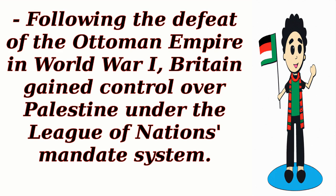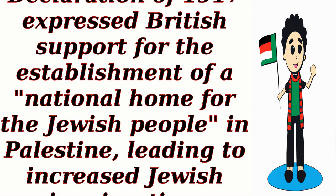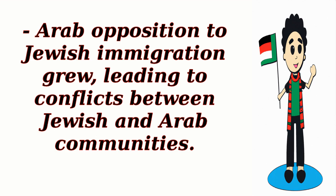Following the defeat of the Ottoman Empire in World War I, Britain gained control over Palestine under the League of Nations mandate system. The Balfour Declaration of 1917 expressed British support for the establishment of a national home for the Jewish people in Palestine, leading to increased Jewish immigration. Arab opposition to Jewish immigration grew, leading to conflicts between Jewish and Arab communities.